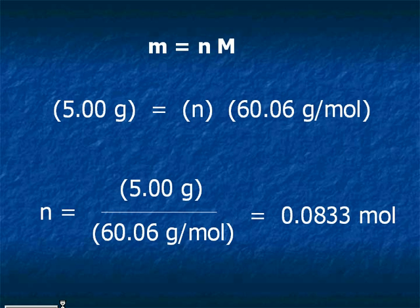In general, we can determine the number of moles by dividing the mass in grams by the molar mass in grams per mole.